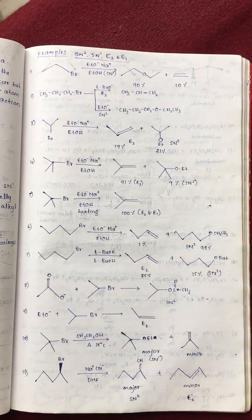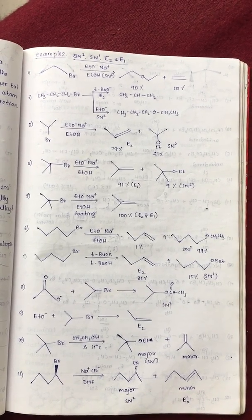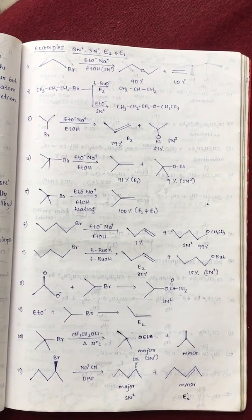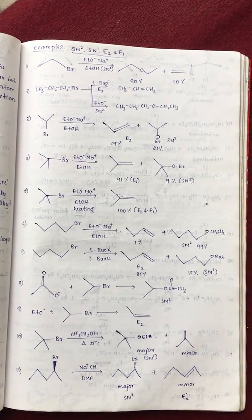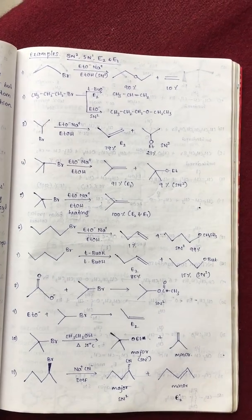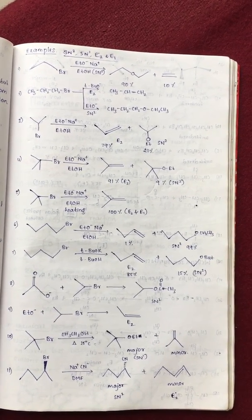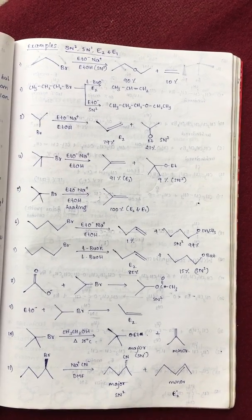Tertiary butyl bromide, the fifth example, reacts with sodium ethoxide in ethyl alcohol with heating. There is no any exception, compulsory 100% elimination. Heating word given, that is compulsory elimination. Now, it gives E2 and E1 product but majorly E2.